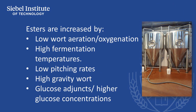Ester levels are influenced by the concentration of the acid and the concentration of the alcohol, which are referred to as the substrates. However, in most cases, the concentration and activity of the enzyme is the controlling factor. Ester production is also very strain dependent. Ester levels are increased by low wort aeration or oxygenation, high fermentation temperatures, low pitching rates, high gravity worts, or glucose adjuncts and higher glucose concentrations.